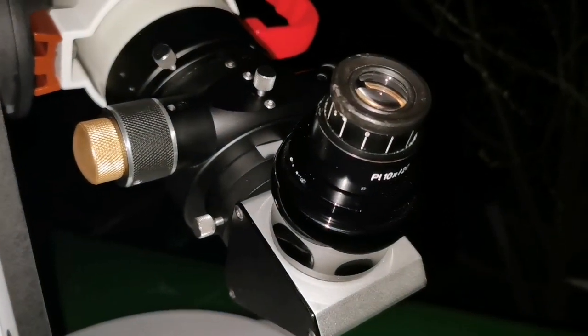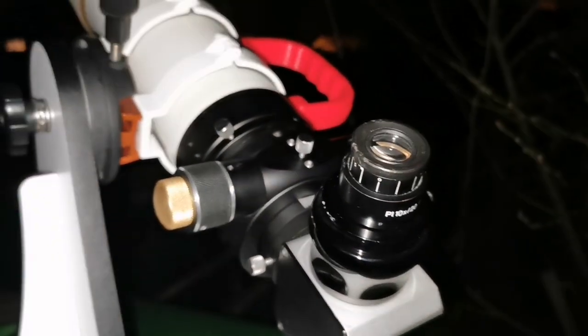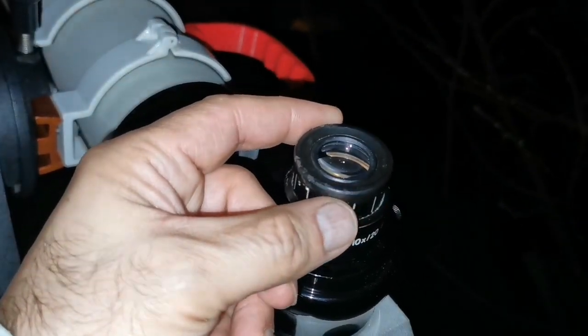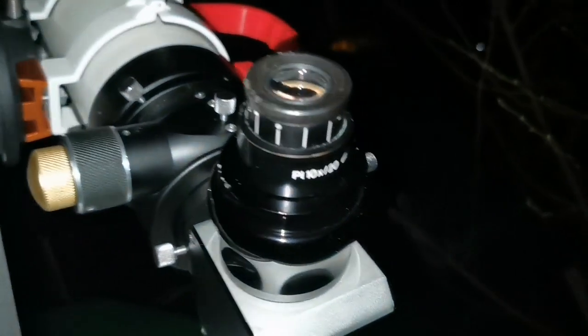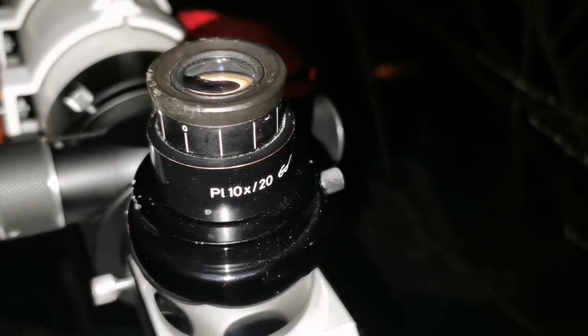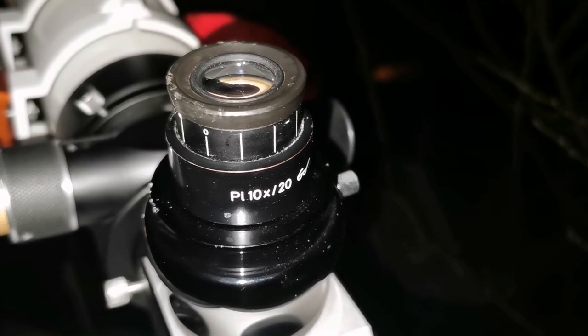I have my best view of the M42 Great Orion Nebula with this telescope and this Zeiss eyepiece, microscope eyepiece. Specification is written here: PL 10x20, that is equal to 25mm 57 degrees.